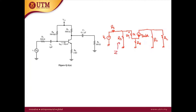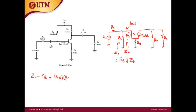The input impedance ZI is seen from the input port. ZI equals Rb in parallel with ZB. Because there is no bypass capacitor at the emitter, we need to calculate ZB — the impedance seen from the base of the BJT. The equation for ZB is: ZB = Rpi + Re × (beta + 1). Once we have ZB, we can calculate ZI.